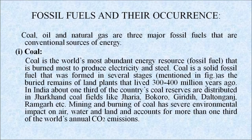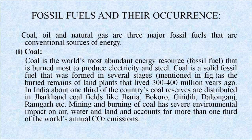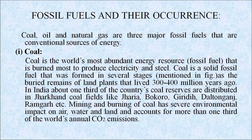Coal, oil and natural gas are three major fossil fuels that are conventional sources of energy. Coal is the world's most abundant energy resource, burnt mostly to produce electricity and steel. Coal is a solid fossil fuel formed in several stages from the buried remains of land plants that lived 300 to 400 million years ago. In India, about one-third of the country's coal reserves are distributed in Jharkhand coalfields like Jharia, Bokaro, Giridih, Dhanbad, etc. Mining and burning of coal has severe environmental impact on air, water and land, and accounts for more than one-third of the world's annual carbon dioxide emissions.